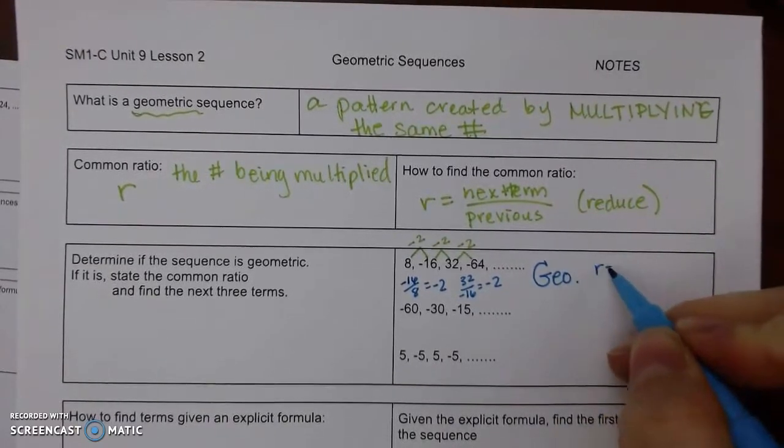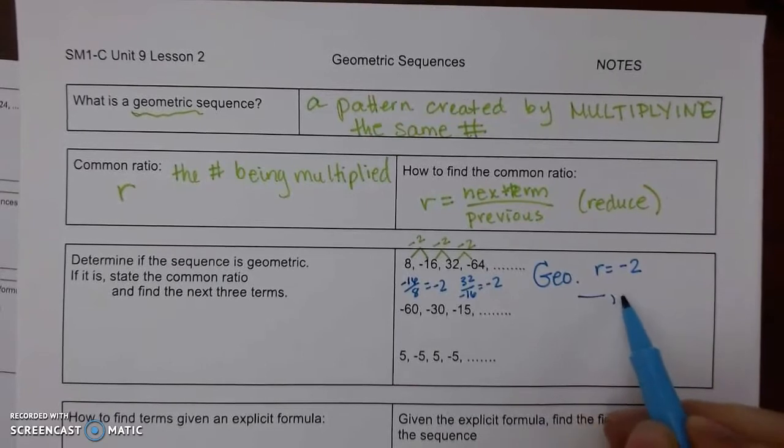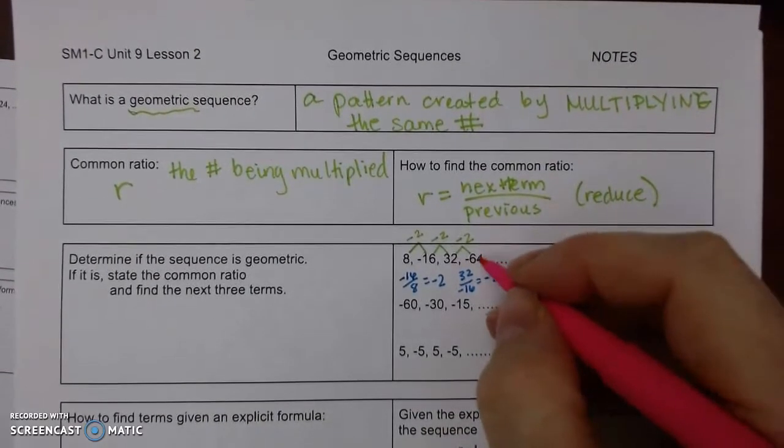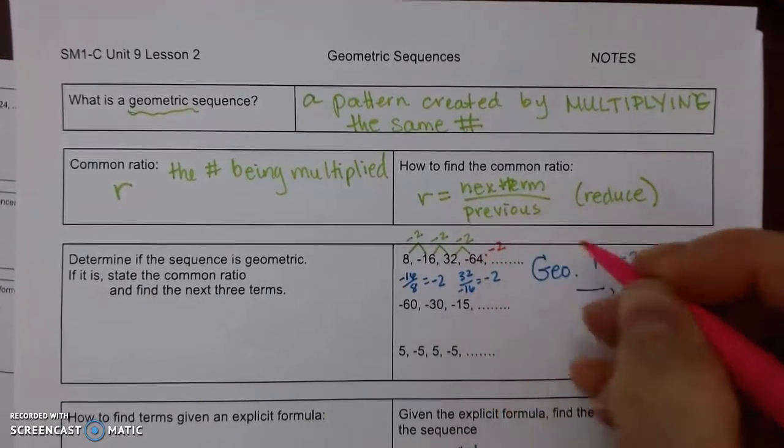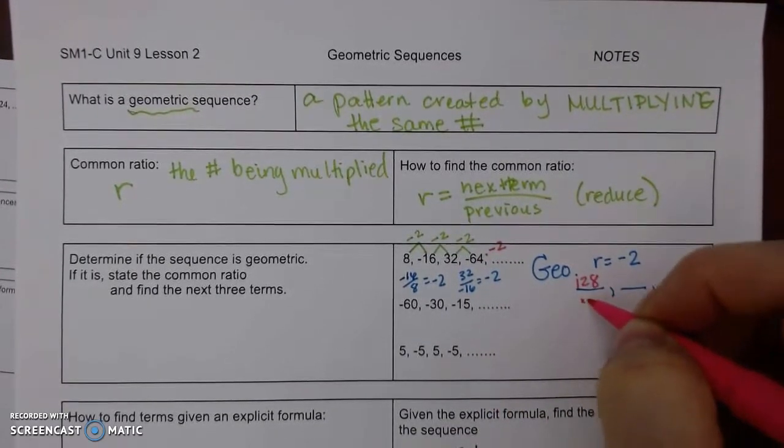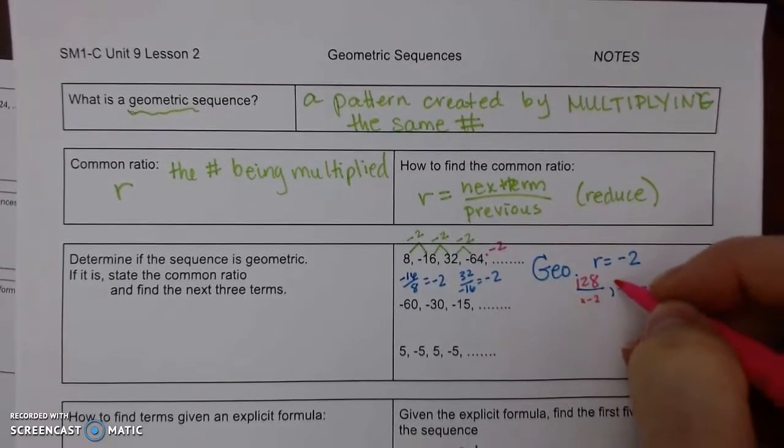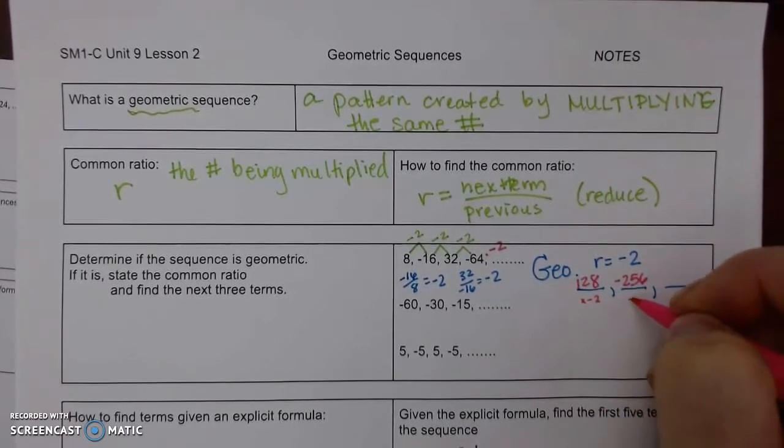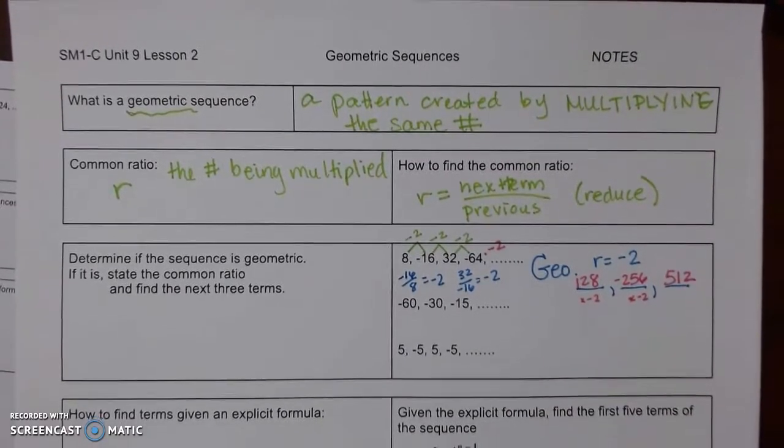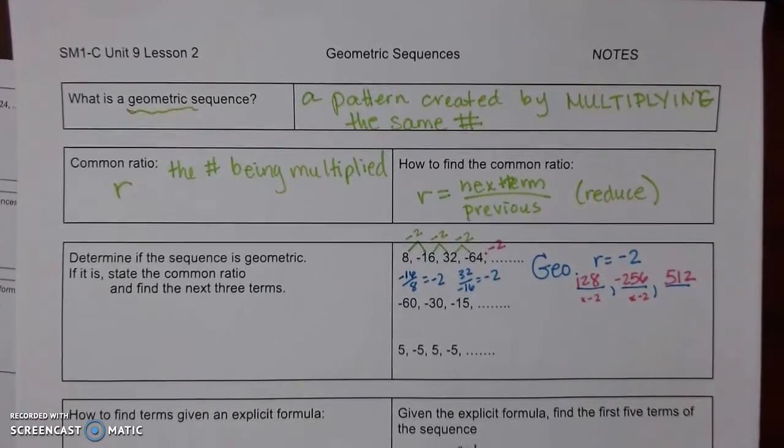Our ratio is negative 2, and then we'll find the next three terms. Negative 64 times negative 2 is 128. 128 times negative 2 is negative 256. And negative 256 times negative 2 is positive 512. Let's look at the next pattern.